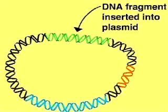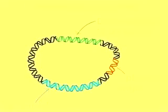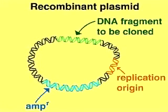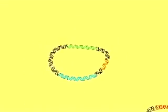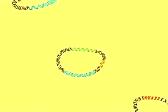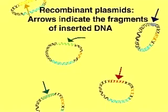Each of these recombinant plasmids contains the inserted DNA fragment, an ampicillin resistance gene, and a replication origin. A pool or library of circular recombinant plasmids is thus created. Each plasmid carries a unique fragment of foreign DNA, as indicated by the colored arrows.